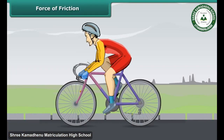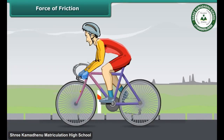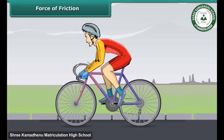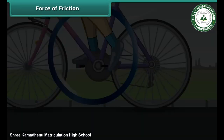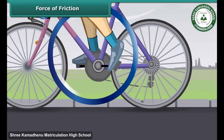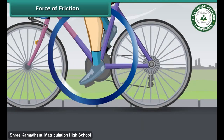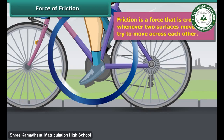Let's take an example from daily life. While moving on a bicycle on the road, you pedal the bicycle and it moves on and on. When you stop pedaling, the bicycle slows down and gradually comes to a stop. Why does this happen? This actually happens because of friction.